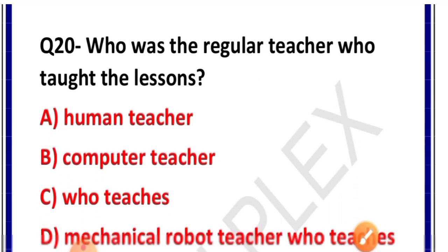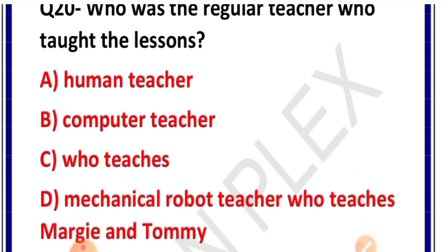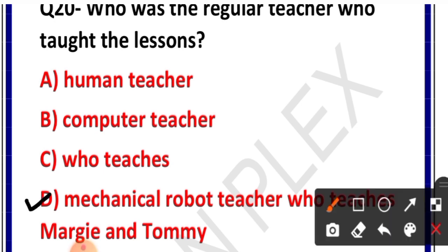Question number 20: Who was the regular teacher who taught the lessons? Options: human teacher, computer teacher, or a mechanical robot teacher who teaches Margie and Tommy. Correct answer is option D — a mechanical robot teacher who teaches Margie and Tommy. Ise hi regular teacher ke naam se is lesson mein bulaya gaya hai.